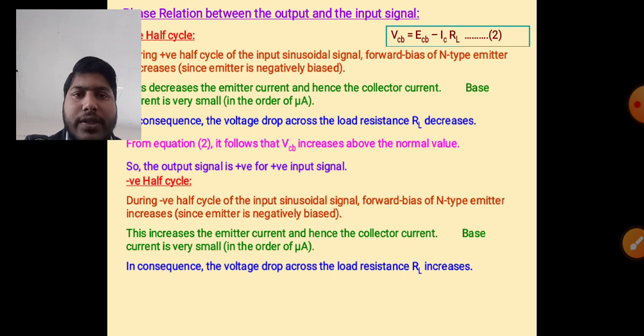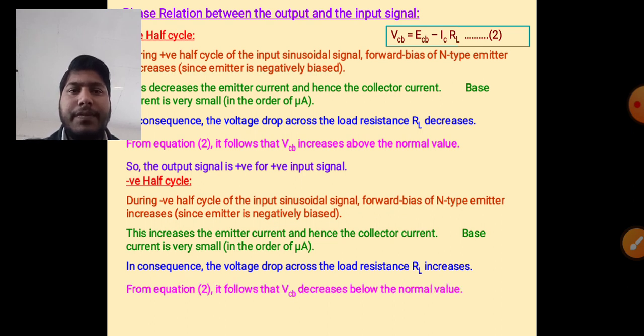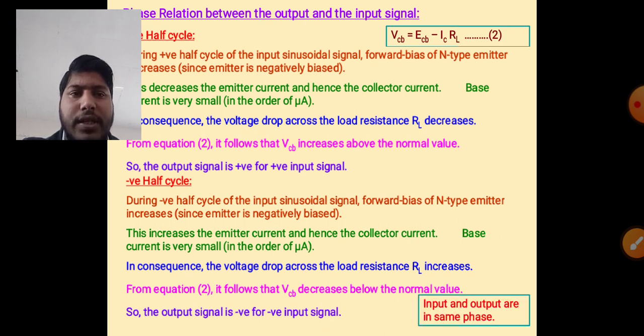In consequence, the voltage drop across the load resistance rl increases. From equation number 2, it follows that vcb decreases below the normal value. So the output signal is negative for negative input signal.